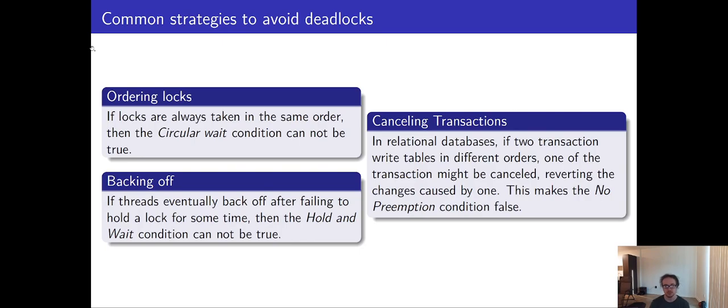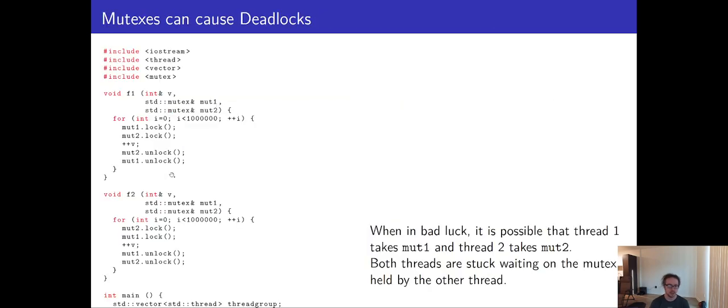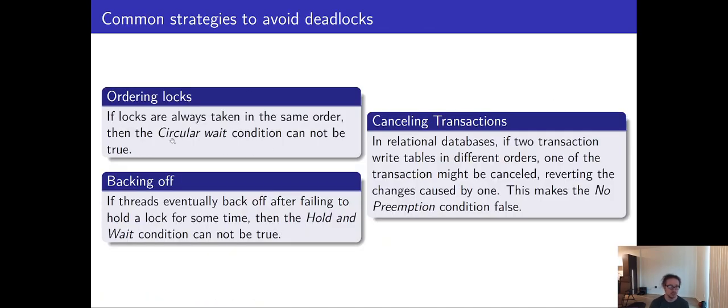There are some strategies we can use to avoid this scenario. So an example is lock ordering. So if we ensure that locks are always taken in the same order and then released in the correct order, then circular wait cannot be true. You can see in our previous slide that we got in trouble because we grabbed mutex one first here and mutex two first here. If f1 and f2 were identical or we were only using f1, then we wouldn't have the problem that we had. So you possibly want to enforce a lock order in the event that you actually need to grab access to multiple resources at the same time.